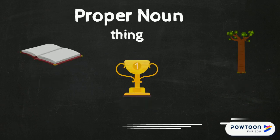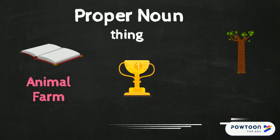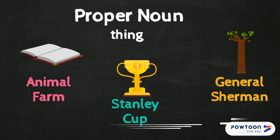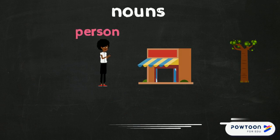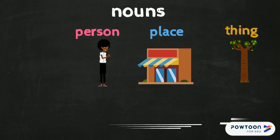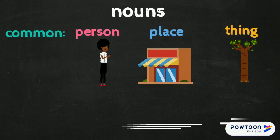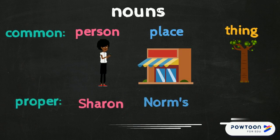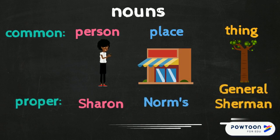Now as proper nouns. To review: a noun is a person, place, or thing. A common noun is a generic label that is lowercase. A proper noun is a specific name that is capitalized.